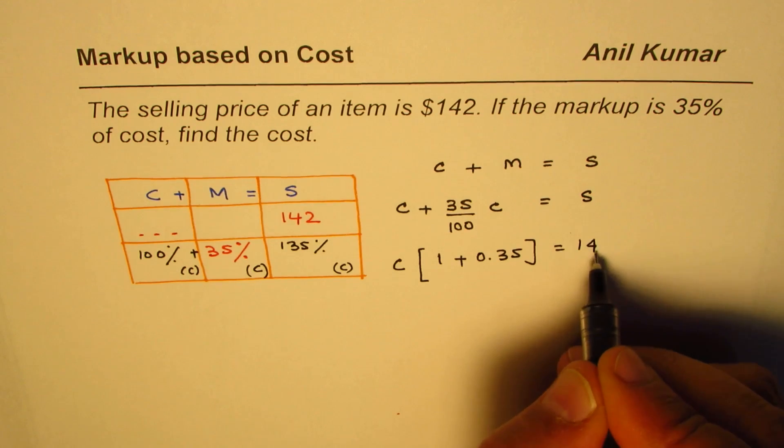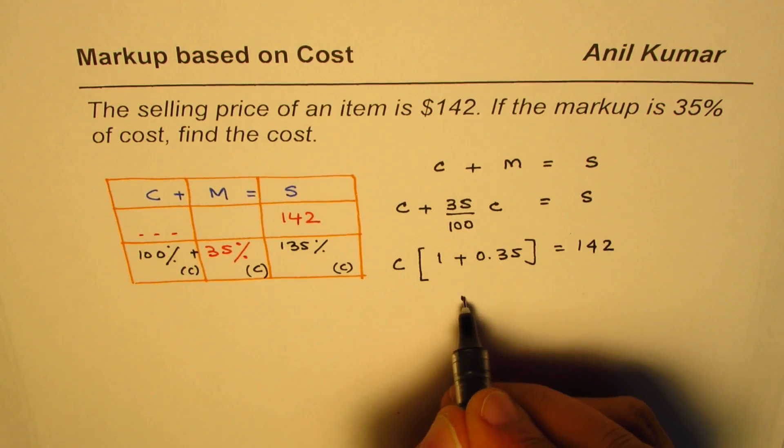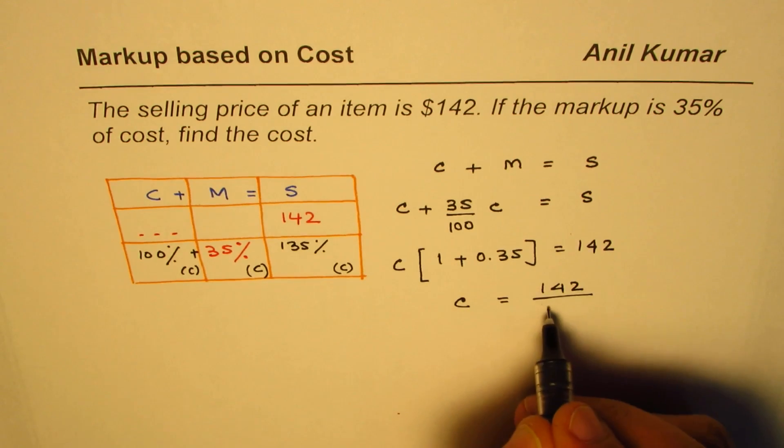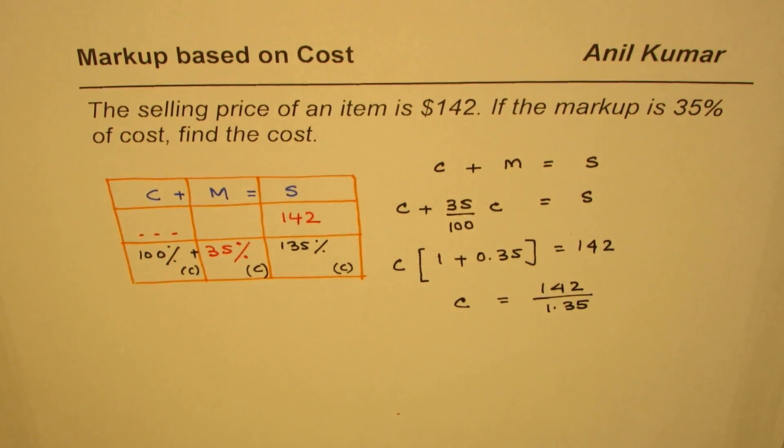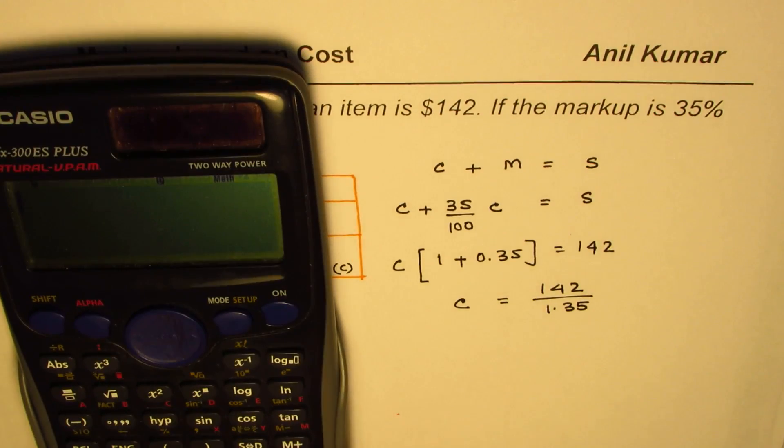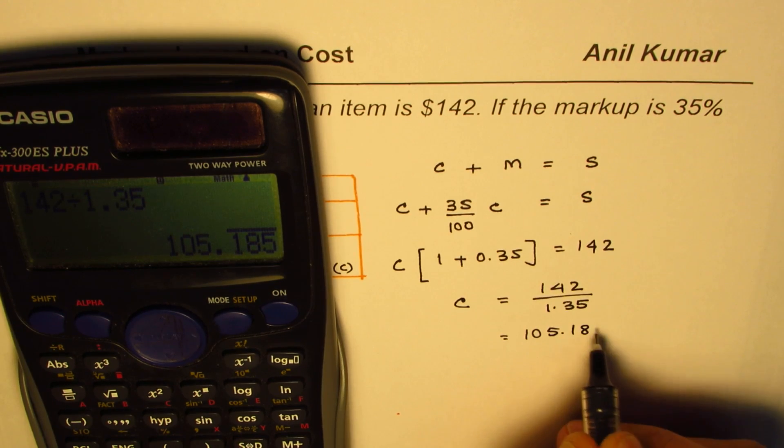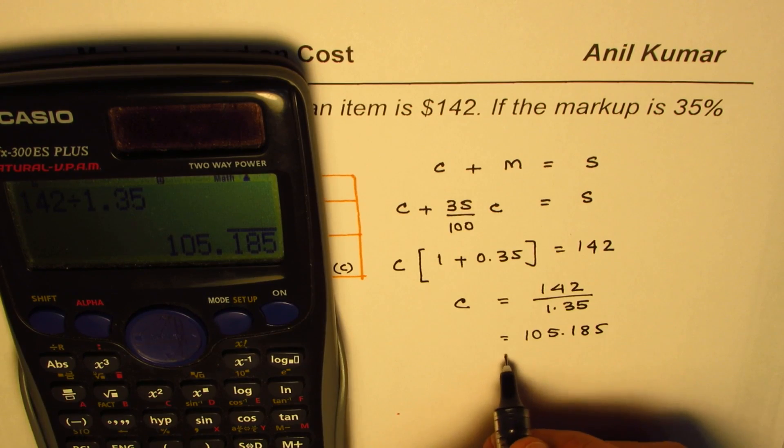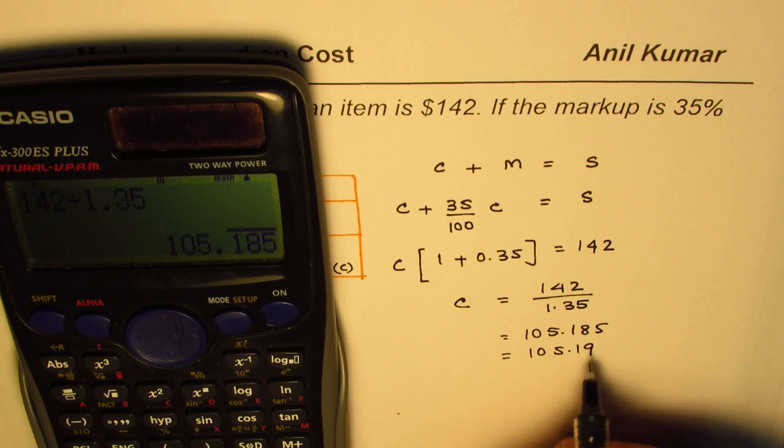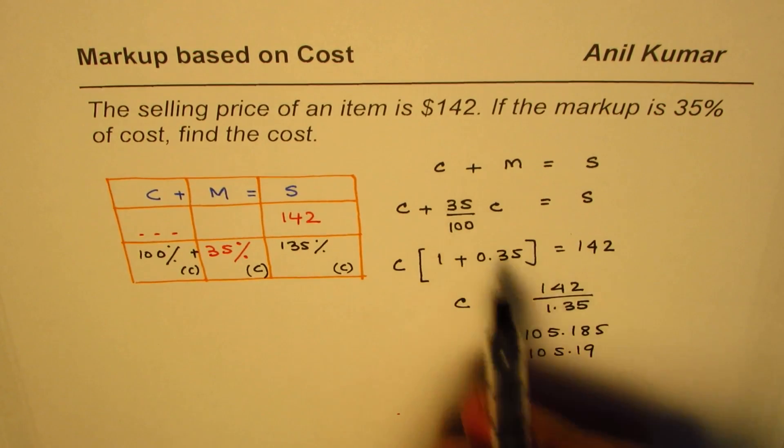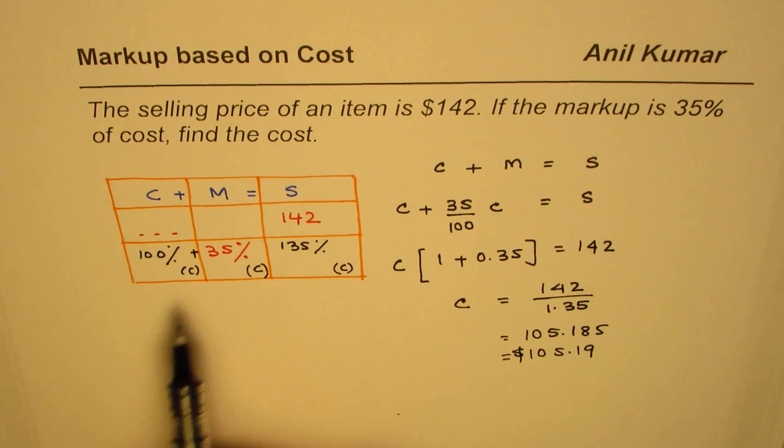From here you can find cost as equals to 142 divided by 1.35. 142 divided by 1.35 gives us in decimals a value of 105.185, which we can round to $105.19. So that's the dollar value of cost.